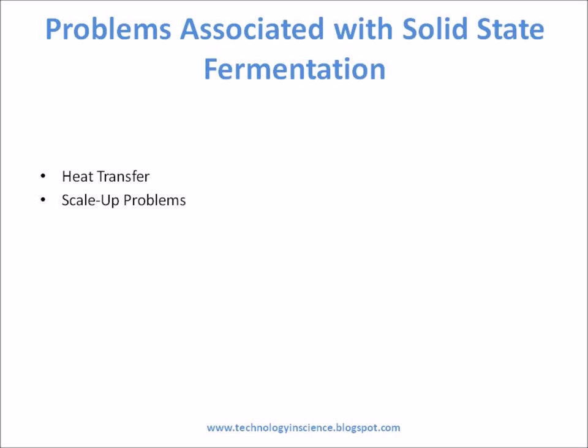Problems associated with Solid State Fermentation — Heat Transfer: One of the main difficulties is to control the temperature during the fermentation process. Heat is generated during the metabolic activities of microorganisms. Since the substrate used has low thermal conductivity, heat removal will be slow. When heat generated goes beyond a certain level, it will have an effect on the product and growth of the microbe, ultimately resulting in a reduction in yield and quality of the product. Process scale-up is also difficult.